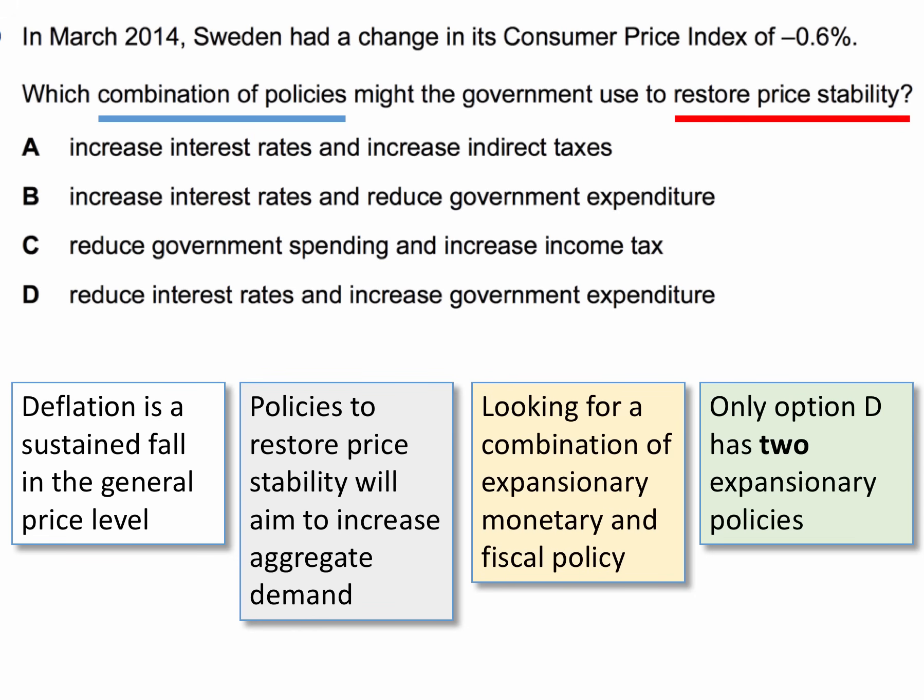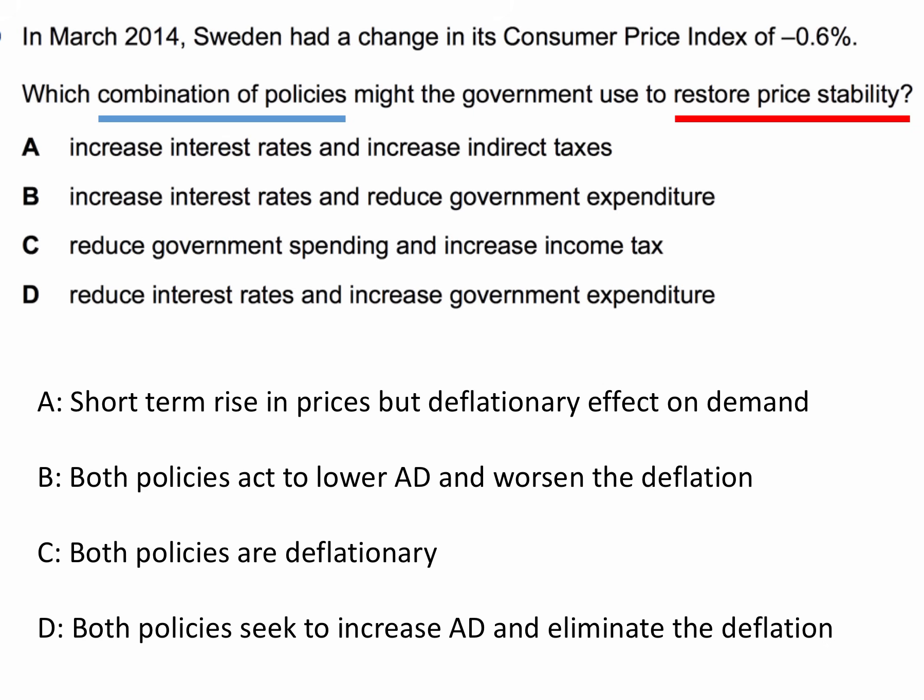Let's work through the four options. Option A: increasing indirect tax would provide a short-term rise in price but doesn't essentially restore price stability, because both higher interest rates and higher VAT act as a deflationary force on demand. Higher indirect taxes reduce people's real incomes, so they have less to spend on goods and services.